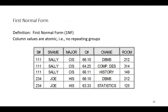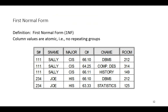First normal form essentially states that all column values are atomic — that is, there are no repeating groups. Notice that in this table, we record information about a student named Sally, who has a student number of 111. Sally is a CS major and Sally has registered for three different classes: course number 66.10, course number 64.25, and course number 66.11.